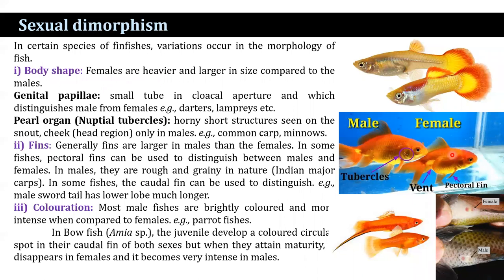Then there is the pearl organ, also known as nuptial tubercles. It is a honeycomb-like short structure seen on the snout and cheek region, found only in males. That is found in the common carp and the minnow.